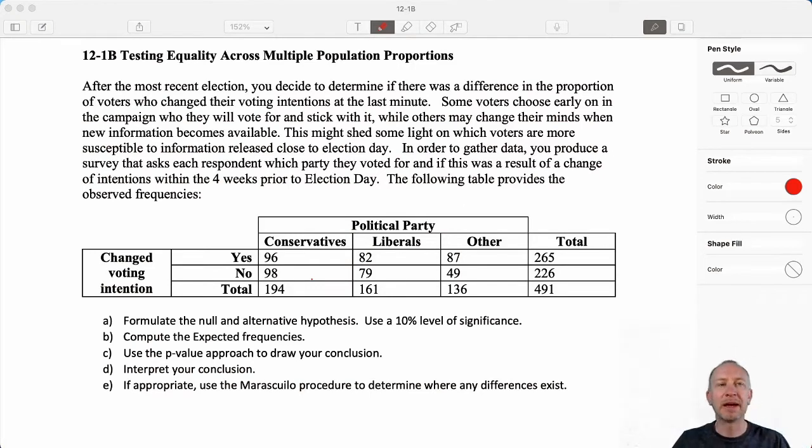Hello everybody and welcome back. So here we are now into our second exercise where we are looking at how to test for equality across multiple population proportions. I will assume you've watched the first couple of videos and you have a fairly good understanding of the methodological approach that is used here.